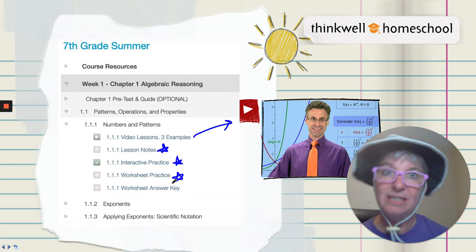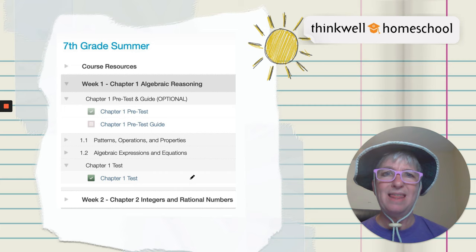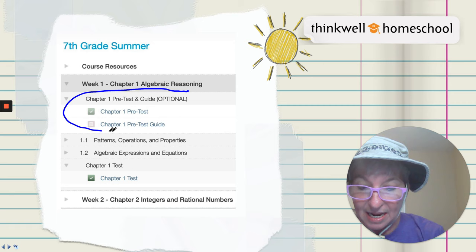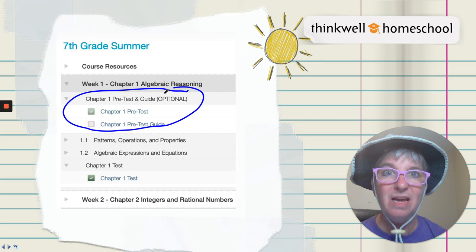All right. Let's say you want to, you're like, I really know, I think I really know Algebraic Reasoning. Well, what you do is you can take the optional pre-test, answer all those questions, then check out the guide and see which ones you got right. And you can skip those topics. Ha! How awesome!